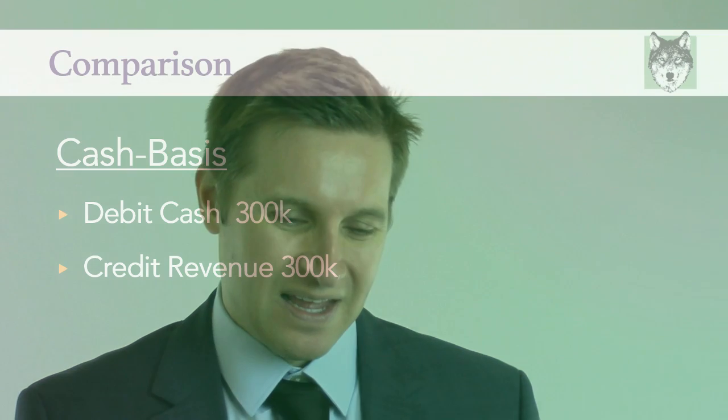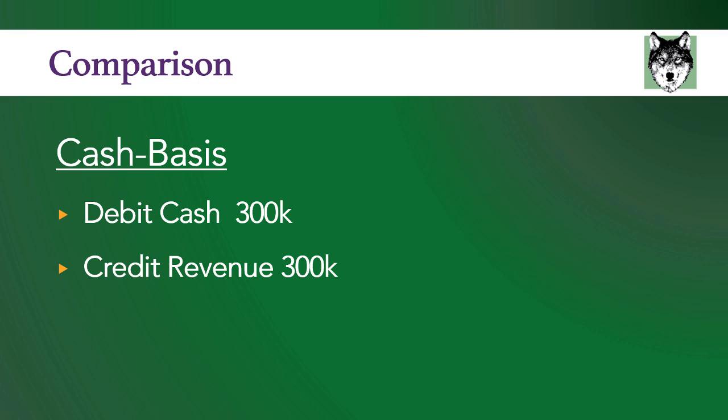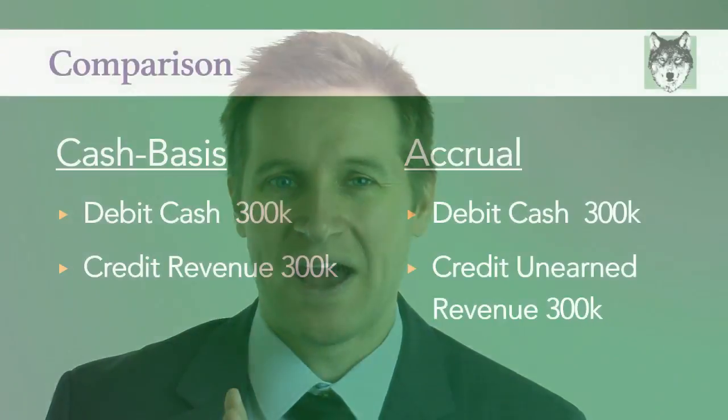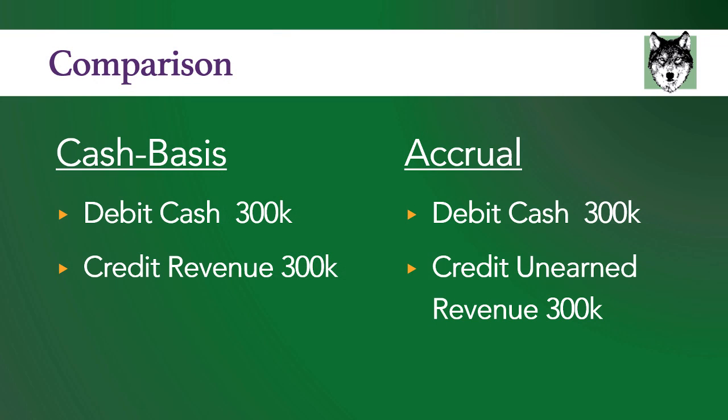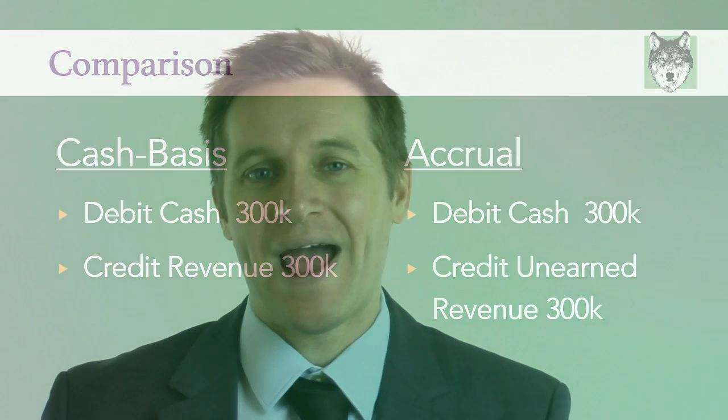Under cash basis accounting, you would record an increase to cash of $300,000 and an increase to revenue of $300,000. Under accrual accounting, you would record the increase to cash of $300,000 and an unearned revenue of $300,000. Accrual accounting more accurately reflects what's going on — you can't recognize the revenue until it's actually been earned, and that is what accrual accounting communicates.